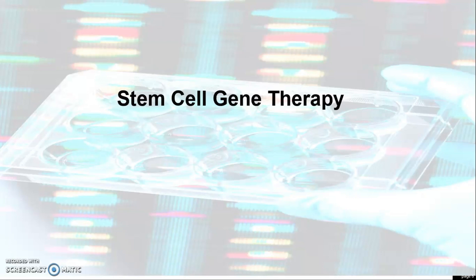We also have stem cell gene therapy. Stem cells are mother cells that have the potential to become any type of cell in the body. One of their main characteristics is the ability to self-renew or multiply while maintaining the potential to develop into various cell types. Stem cells can become cells of the blood, heart, bones, skin, muscles, brain, and others. All types of stem cells share the same capacity to develop and multiply into various cell types.